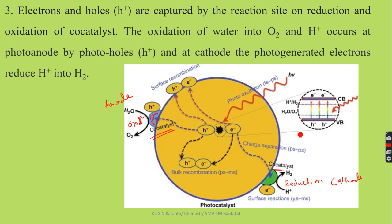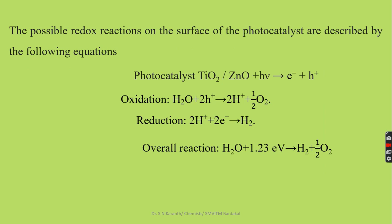We can observe the reactions as follows: water molecules in the valence band, with the help of holes, evolve oxygen, and electrons in the conduction band reduce H⁺ to hydrogen gas. When photon energy (hν) hits the semiconductor, electrons and holes are created. Holes assist the oxidation of water molecules into 2 moles of protons and half a mole of oxygen, and 2 moles of protons take 2 electrons at the cathode to liberate hydrogen gas. The overall reaction is: water splits into hydrogen and oxygen.